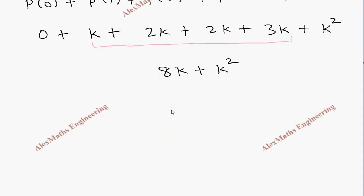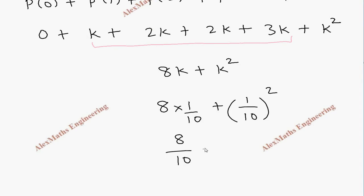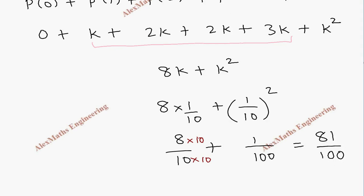Substituting k = 1/10, we get 8/10 plus (1/10)², which is 8/10 plus 1/100. Making a common denominator by multiplying by 10, the numerator becomes 80 plus 1, giving 81/100.